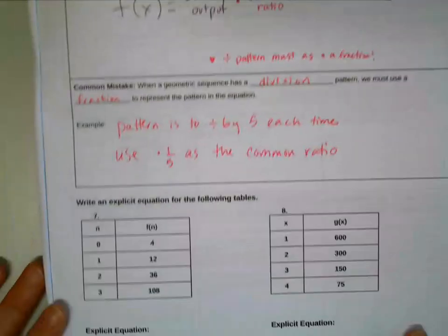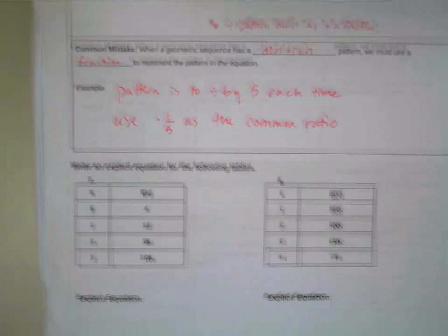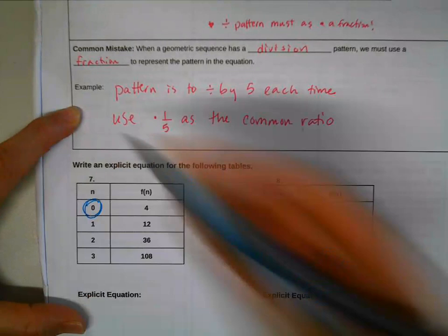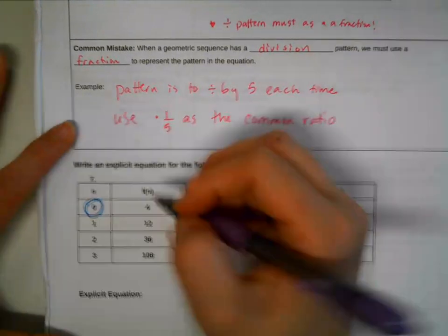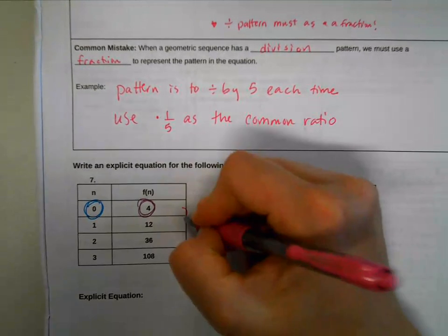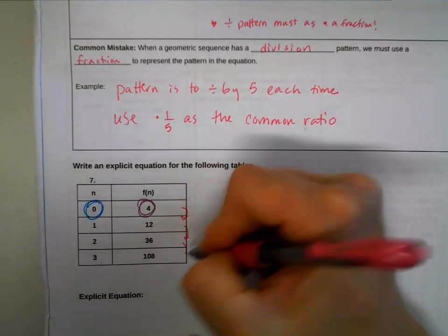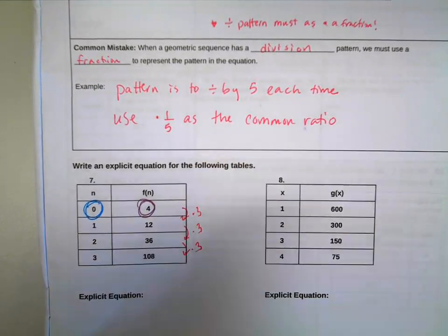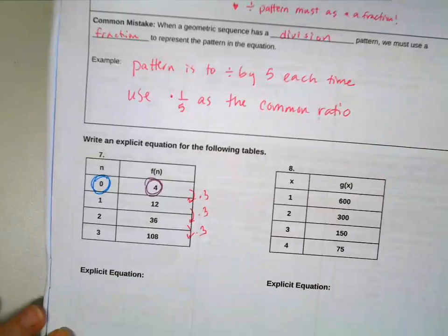So let's do this. We are going to do the same thing we did before. We're going to identify our three important numbers. My starting input here is a zero, my starting output is a four. We have to find that common ratio. So what's happening between each of these? That's a times three, that's a times three, that's a times three. Here's my common ratio.